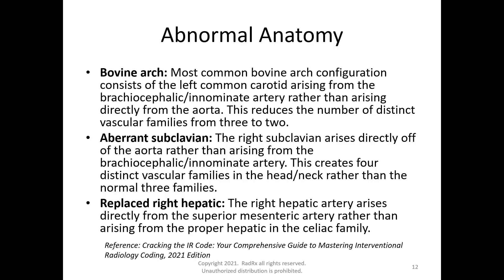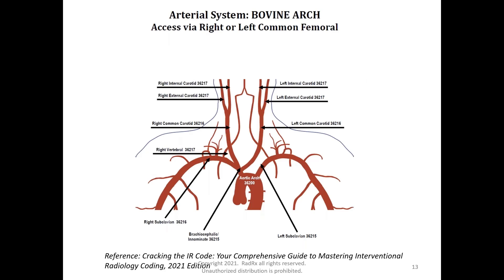When a patient has abnormal anatomy, that is going to change your catheterization coding — it changes your vascular order, first, second, and third order, depending upon the branching pattern. For example, here's a picture of a bovine arch showing two vascular families coming off the aortic arch: one starting with the left subclavian and one with the brachiocephalic. In normal anatomy, there are actually three vascular families where the left common carotid comes directly off the aortic arch.